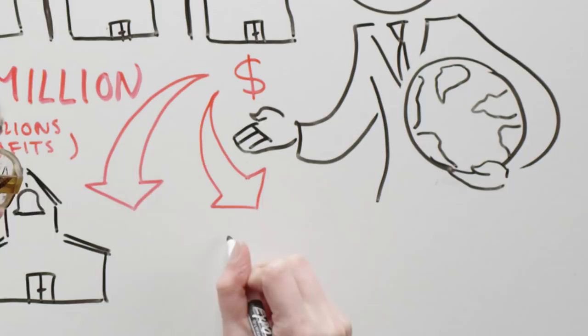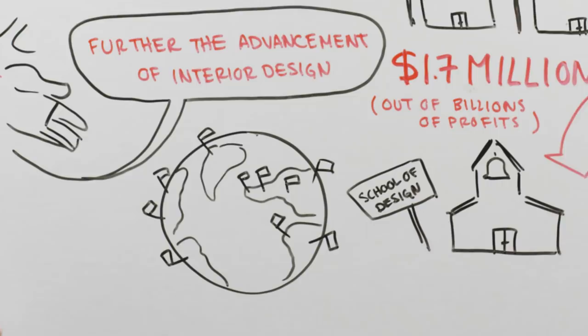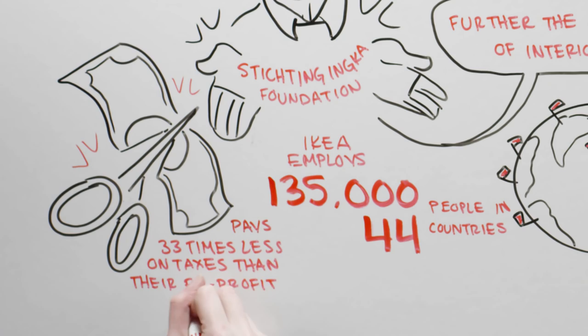IKEA employs 135,000 people in 44 countries. Because of tax breaks for non-profits, IKEA pays about 33 times less on taxes than their for-profit counterparts, a minuscule 3.5% in taxes on its $27 billion in annual sales.